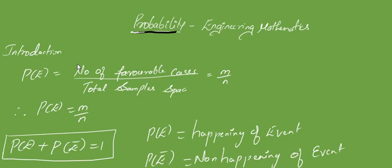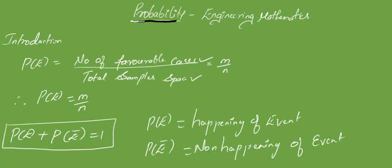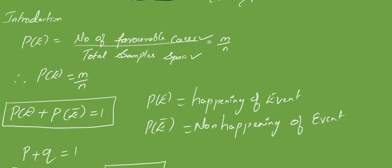The basic introduction is: probability of any event depends on the favorable cases and its sample space. Probability of E can be written as the ratio of number of favorable cases divided by the total samples. Total samples are nothing but the total possible outcomes. In short, probability of an event can be written as m by n.